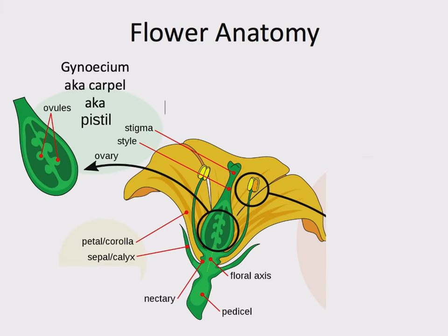The female structure is a bit more complicated. In the center of the flower it's called the gynoecium, also known as the carpel, also known as the pistil — sorry for all the names. 'Gyno' means female, as in gynecology. The gynoecium or carpel or pistil is the female sex organ in the plant. It has a stigma at the top that's sticky and traps pollen. From there the pollen tube travels down the style and down to the ovary, which houses the ovules where fertilization occurs.